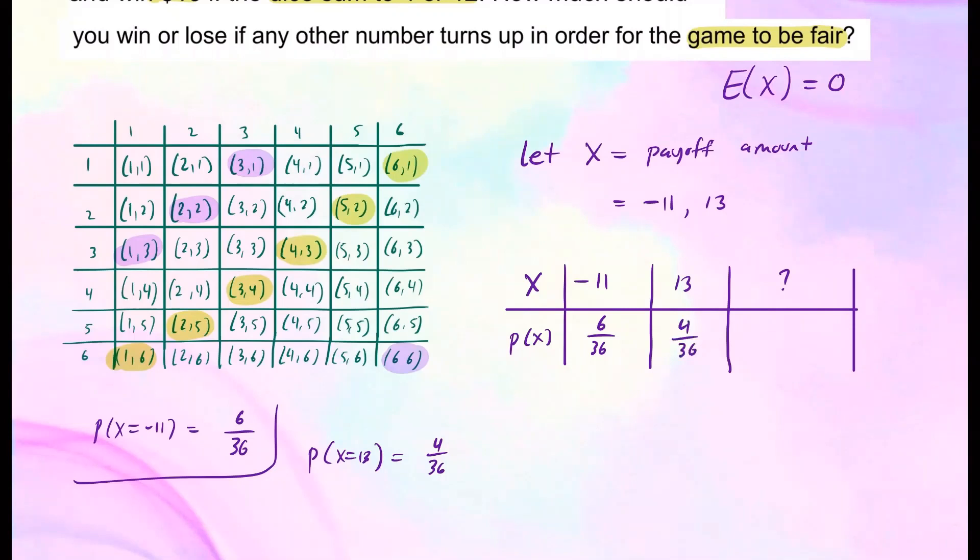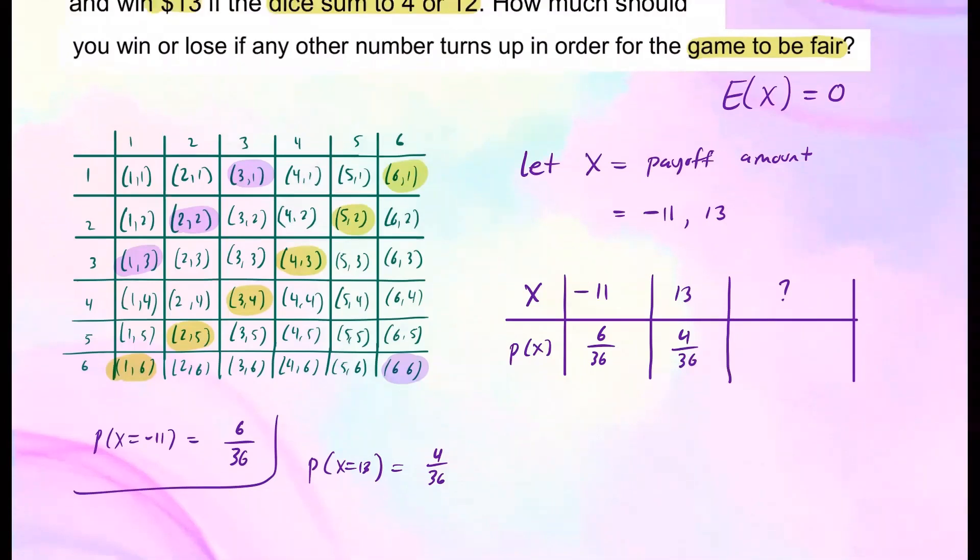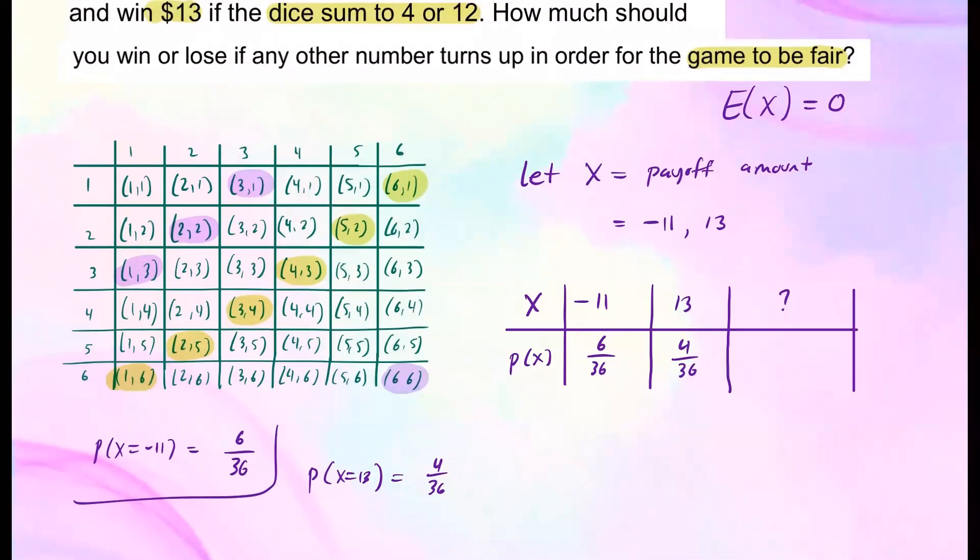Now, what about the rest? So the ones that are not sum to be seven or four or 12. So ignoring these outcomes, the rest are going to give us other possible outcomes. So six plus four, that's 10 of them. So out of the 36, be 36 minus 10, that's 26 over 36. So that's for the remaining outcomes of this event.